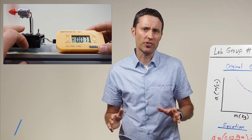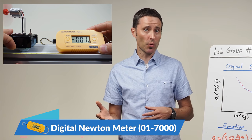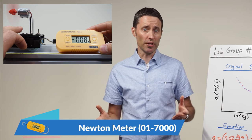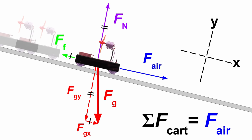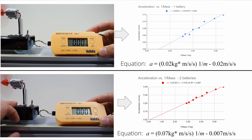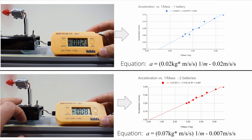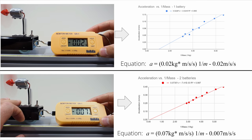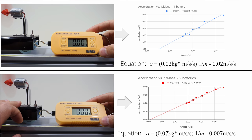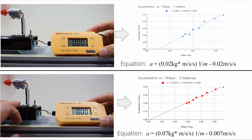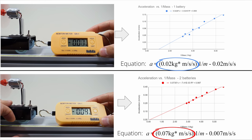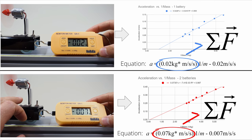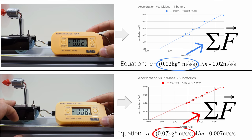Suggest that the size of the sum of the forces on each fan cart can be measured with a force sensor or digital newton meter. Remember that the sum of the forces on the fan cart is equal to the size of the force on the fan cart by the air. Measure the approximate size of the sum of the forces on a fan cart with two batteries and the size of the sum of the forces on a fan cart with one battery and one spacer. These force measurements should be very close to the slope values, showing that the slope in each group's equation does represent the size of the sum of the forces on the fan cart.